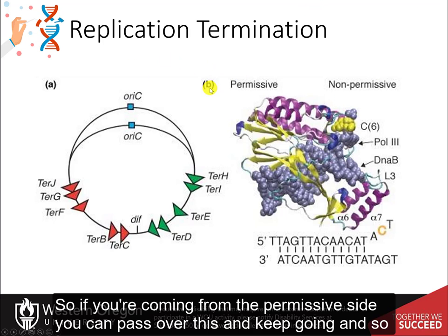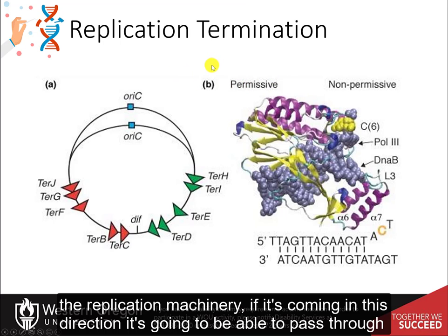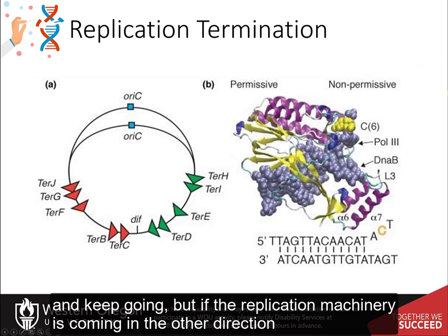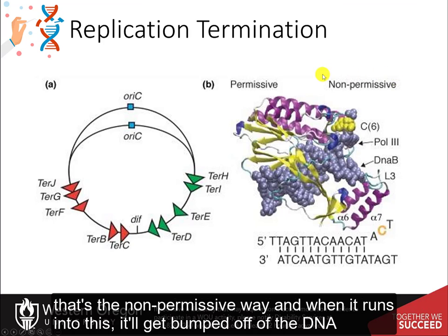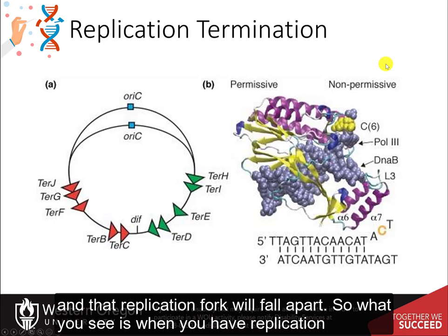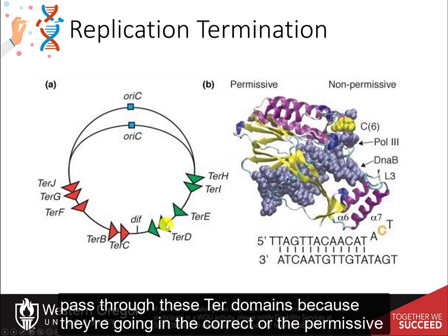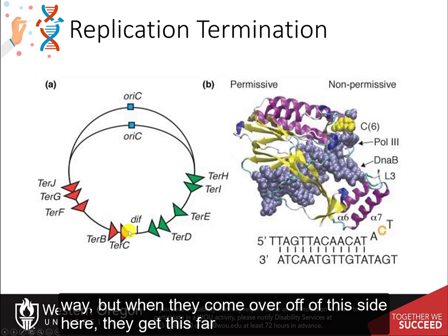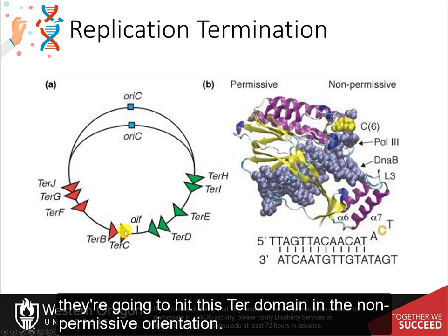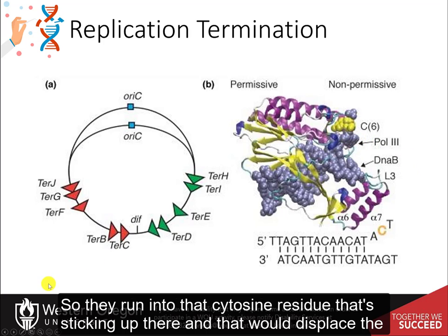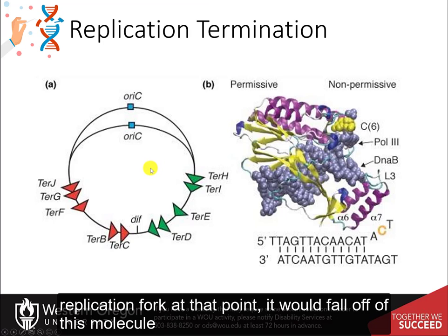If the replication machinery is coming from the permissive side, it can pass through and keep going. But if the replication machinery is coming from the other direction — the non-permissive way — when it runs into this, it will get bumped off of the DNA and the replication fork will fall apart. So replication machinery going in the correct or permissive direction can pass through these ter domains, but when coming from the other side, it hits the ter domain in the non-permissive orientation, runs into that cytosine residue sticking up, and the replication fork is displaced and falls off the molecule.